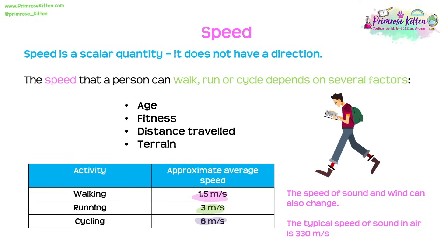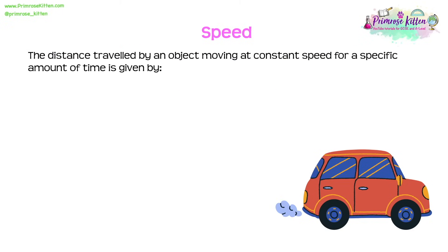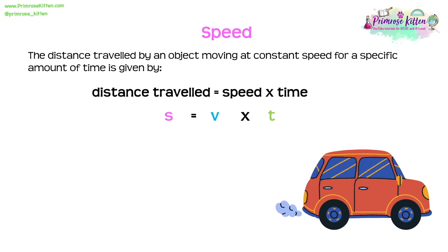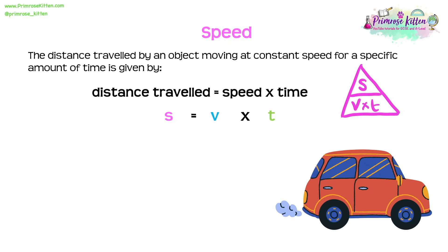The speed of sound and wind can change depending on conditions. The typical speed of sound in air is 300 metres per second. The distance travelled by an object moving at constant speed is given by: distance equals speed times time, or s = vt. Distance is measured in metres, velocity in metres per second, and time in seconds.